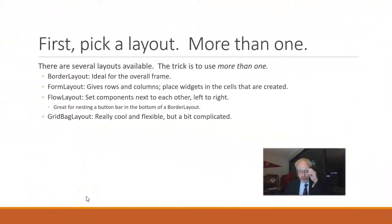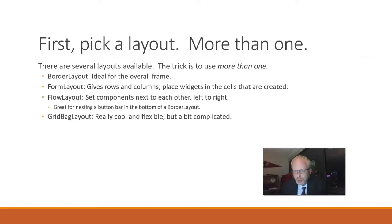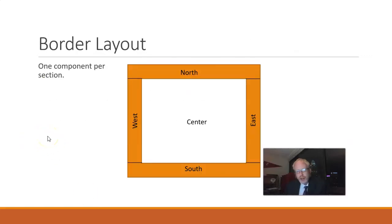There are several different layouts we can use, and the trick is that the layouts all have a good purpose and we can combine them together. Let's start with an overview of what the layouts are: border layout is oftentimes the overall frame; form layout is a component from an organization called JGoodies that gives us rows and columns like a spreadsheet; flow layout just organizes things one right after the other and creates a new row if needed; and grid bag layout is really cool for professional-looking apps but is the most complicated to learn.